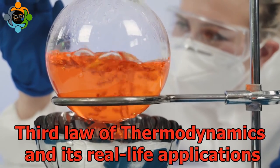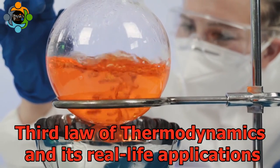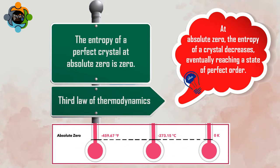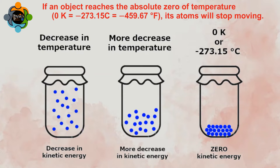Today we will discuss the third law of thermodynamics and its real-life applications. The third law of thermodynamics states that the entropy of a perfect crystal at absolute zero is zero. This means that as we approach absolute zero, the entropy of a crystal decreases, eventually reaching a state of perfect order.